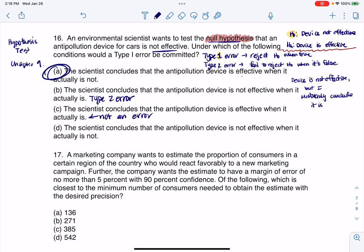D, the scientist concludes that the anti-pollution device is not effective when it is not. Well, this is, again, not an error. This is a good thing. Not an error. So A through D are the four options that could happen. Right. So we could either make a type 1 error, a type 2 error, or we could get it correct. All right. So A is our answer for this one.